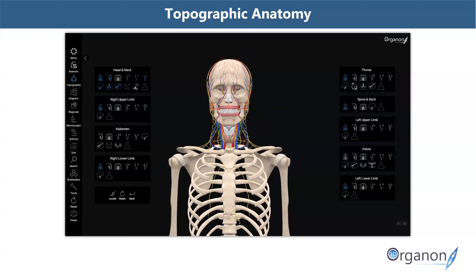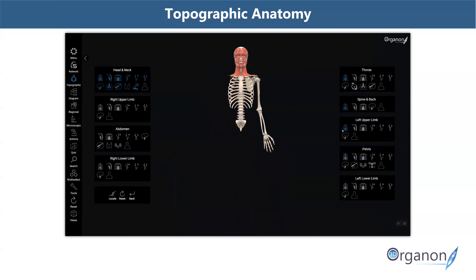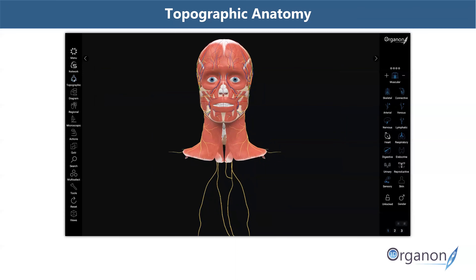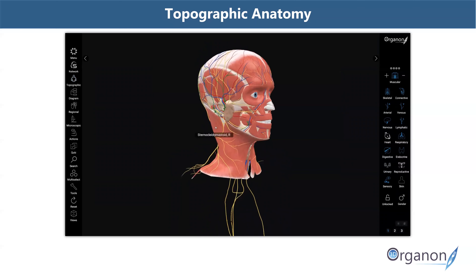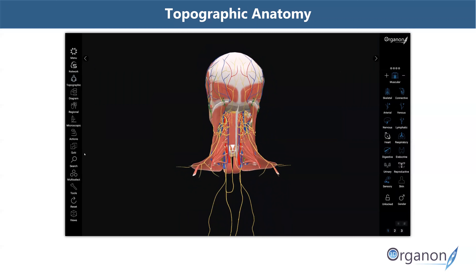Here we'll start with the head and neck and construct the model by adding related body parts such as arteries, veins, the nervous system and many others. We can also view other topographic anatomy sections and subtract sections not directly related or of no immediate interest. When you deactivate the topographic anatomy icon, the constructed 3D model remains on your screen view, ready for further engagement with the functions, features and tools available.